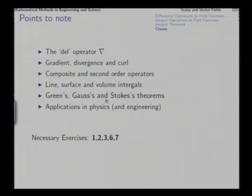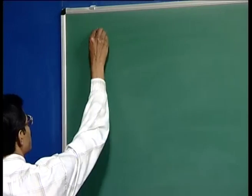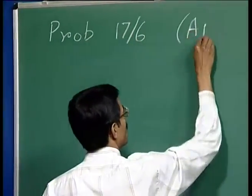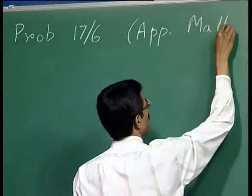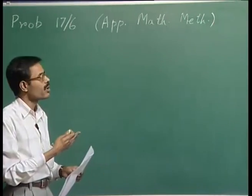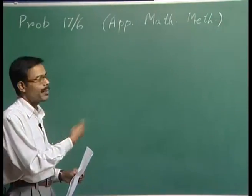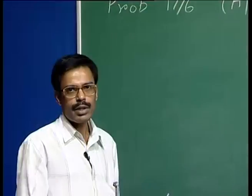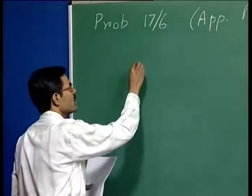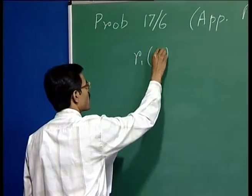In these two lectures on vector calculus, by avoiding some of the longer proofs, we have saved some time. Now we consider one problem on a parametric curve — this is problem 17.6 from the textbook. In the appendix of the book corresponding to this problem, three approaches have been outlined; here I will elaborate one of those approaches.